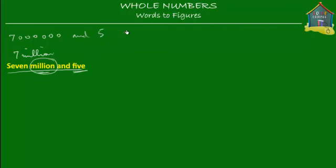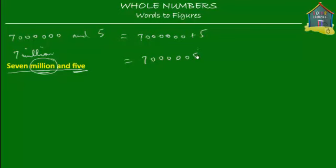This gives you seven million plus five, and seven million plus five is simply seven million and five — that's seven followed by five zeros and then the last digit five. If you don't want to do it this way — writing seven million and five and then adding — you don't have to do it that way.